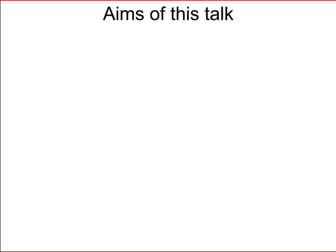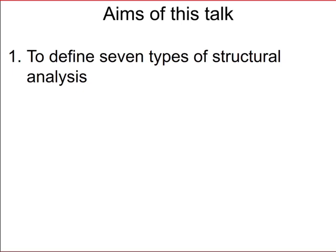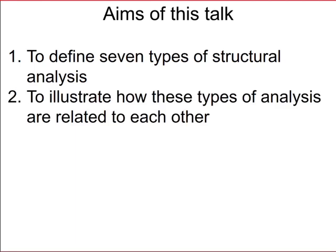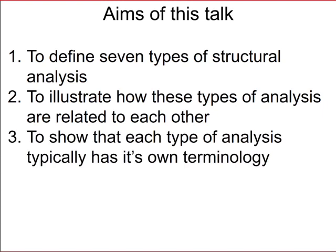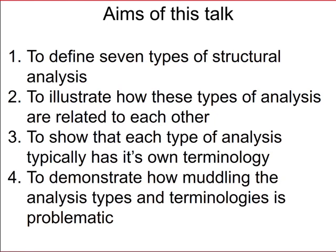The aims of this talk are to define these seven types of structural analysis — these seven pillars of wisdom — to illustrate how these types of analysis are related to each other, and to show that each type of analysis typically has its own terminology. Often these terminologies are muddled up as the analyses are muddled up, and we think that these terms should be separated and understood in the context of the seven pillars. I'll also illustrate how muddling the analysis types and terminologies can be very problematic, leading to muddled thinking and incorrect results.